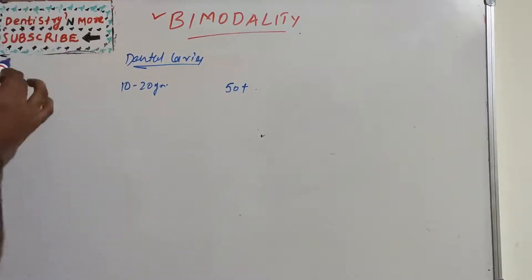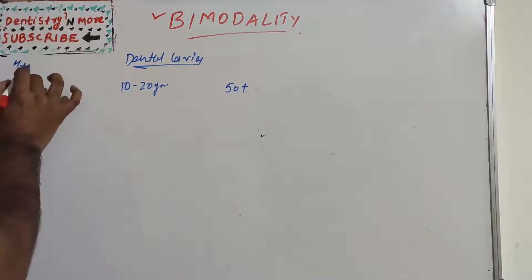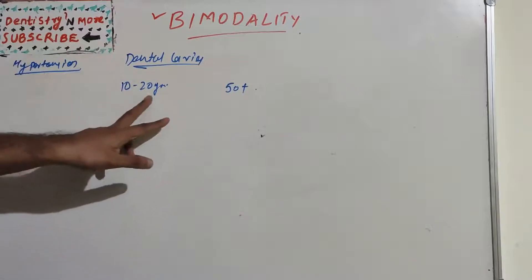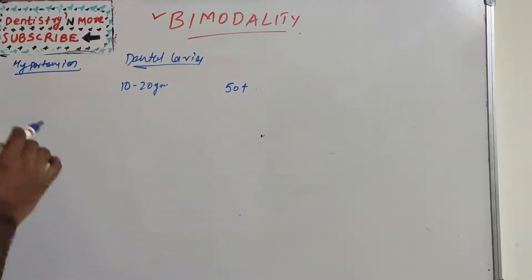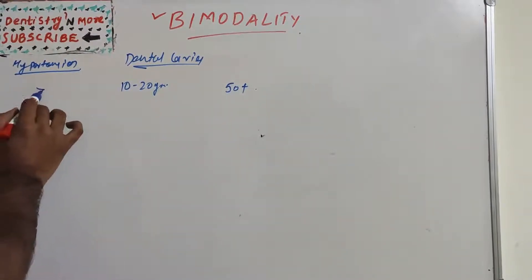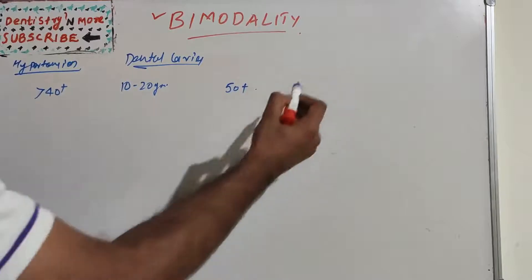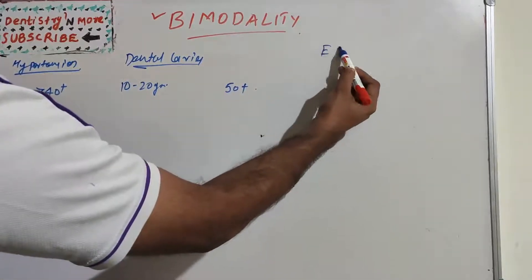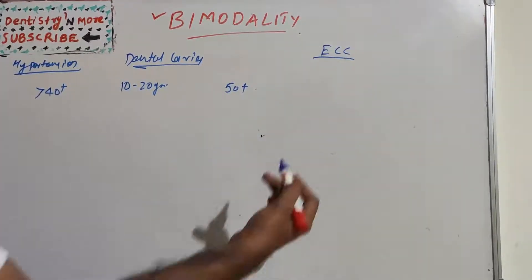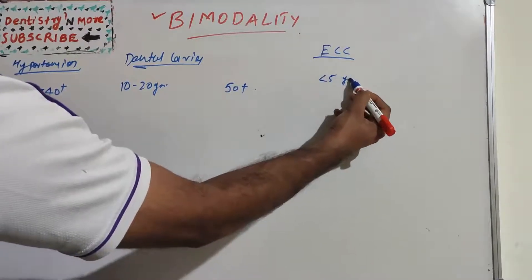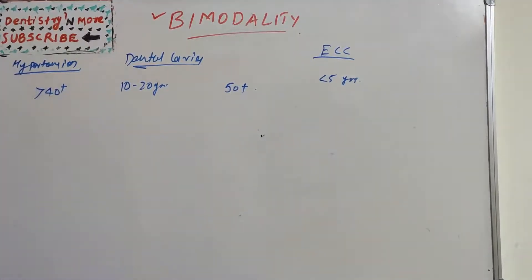Dental caries, whereas let's take hypertension. Hypertension is not seen like this. It is most commonly seen in 40 plus age groups. And let's take another example, early childhood caries, which is commonly seen in less than five years.